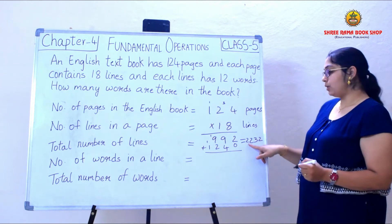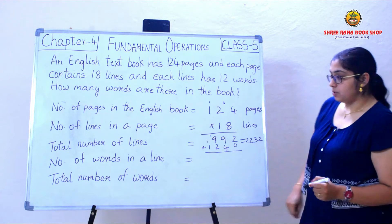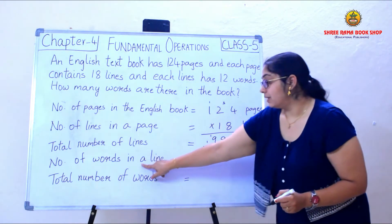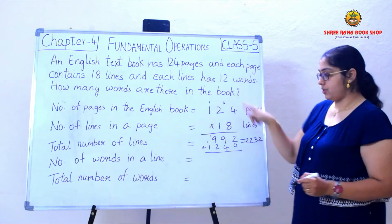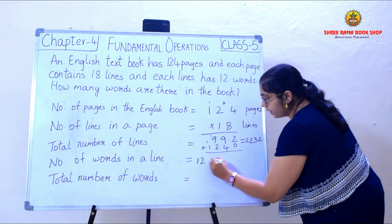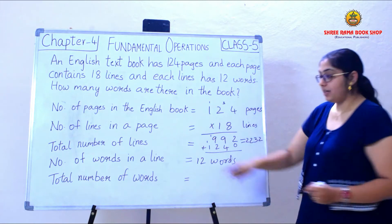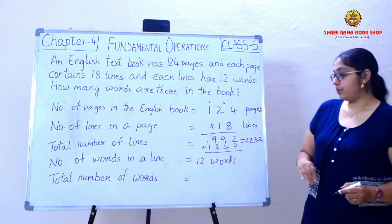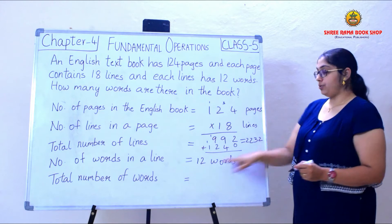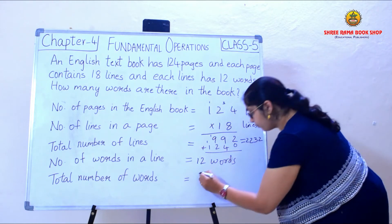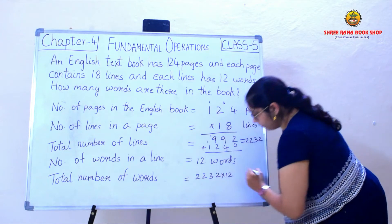So how many lines are there? 2,232 lines are there in the book. The number of words in each line is 12 words. To find the total number of words, I need to multiply 2,232 by 12.